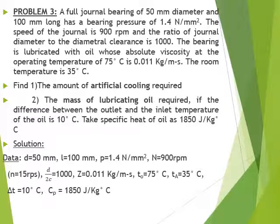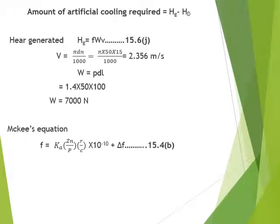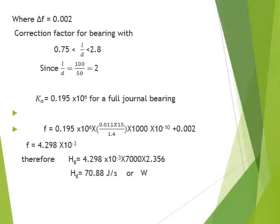The first thing to calculate is the amount of artificial cooling, which equals Hg minus HD — heat generated minus heat dissipated. Heat generated is calculated using equation 15.6: Hg = F × W × V, where V = πDN/1000 and W = pressure × D × L. The only unknown is the coefficient of friction F, calculated from Mackey's equation: F = Ka × (ZN/P) × (R/C) × 10⁻¹⁰ × δF, which is equation 15.4.